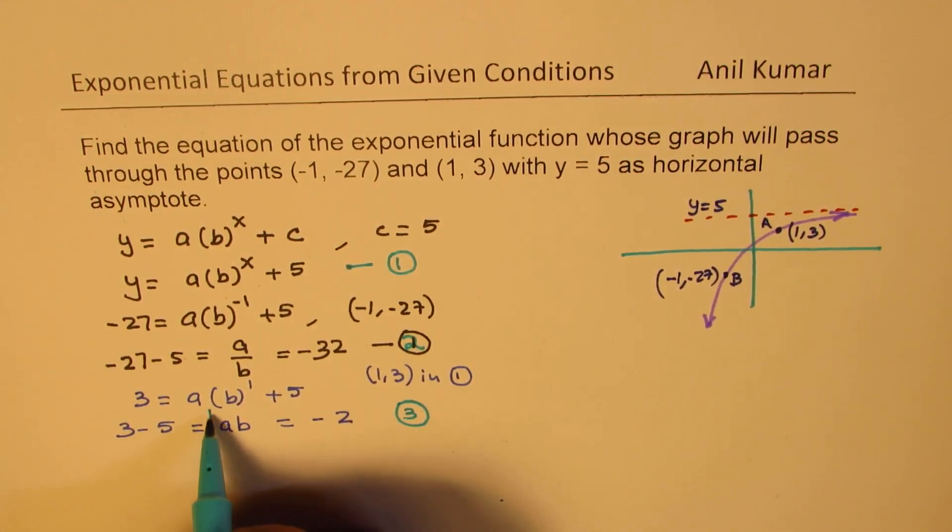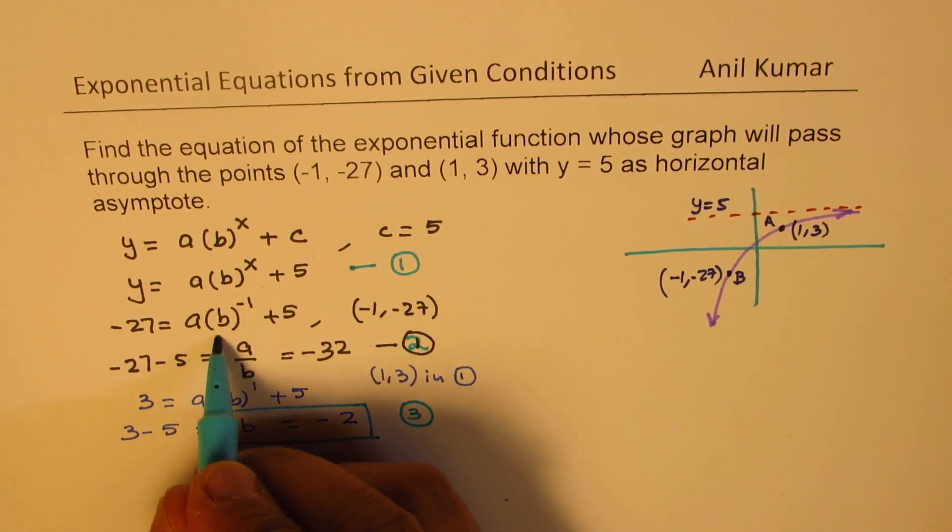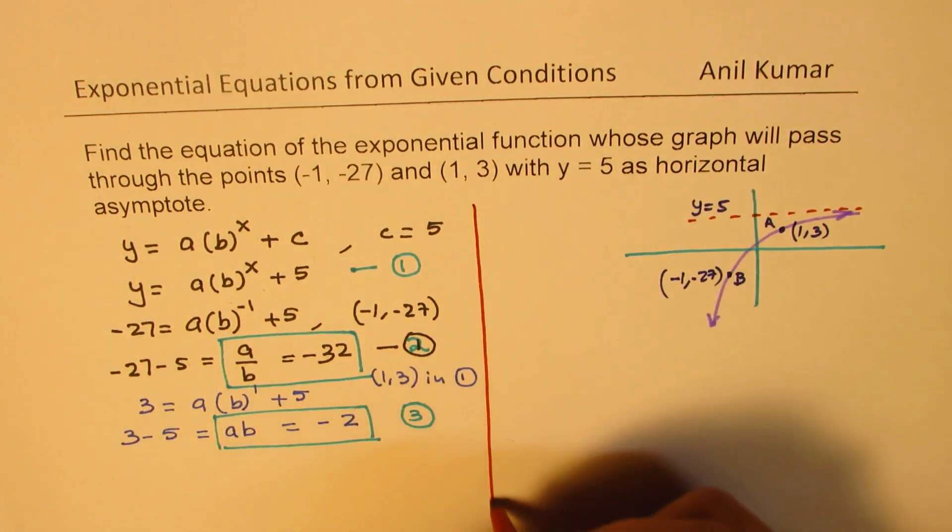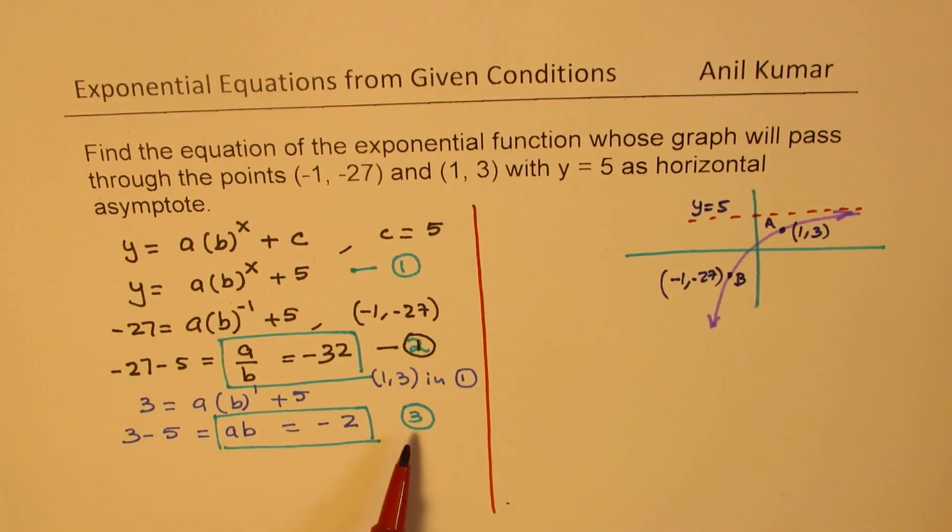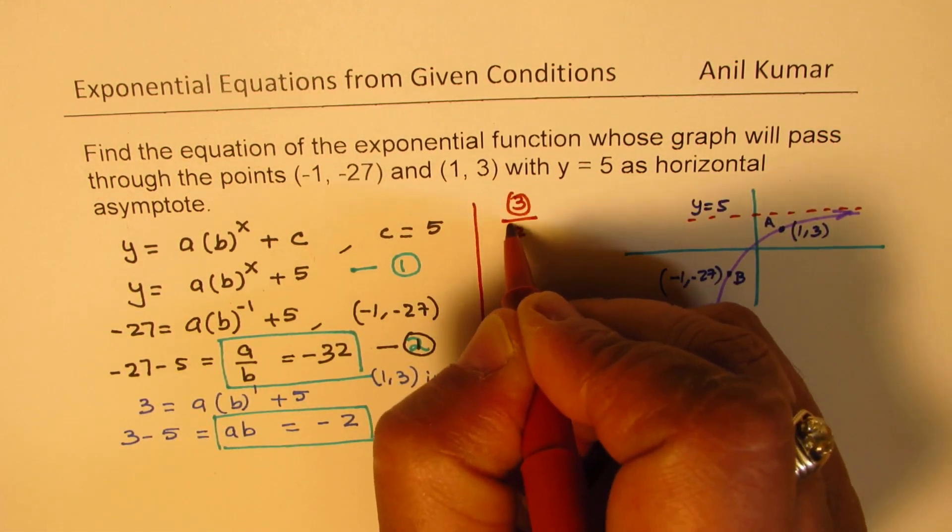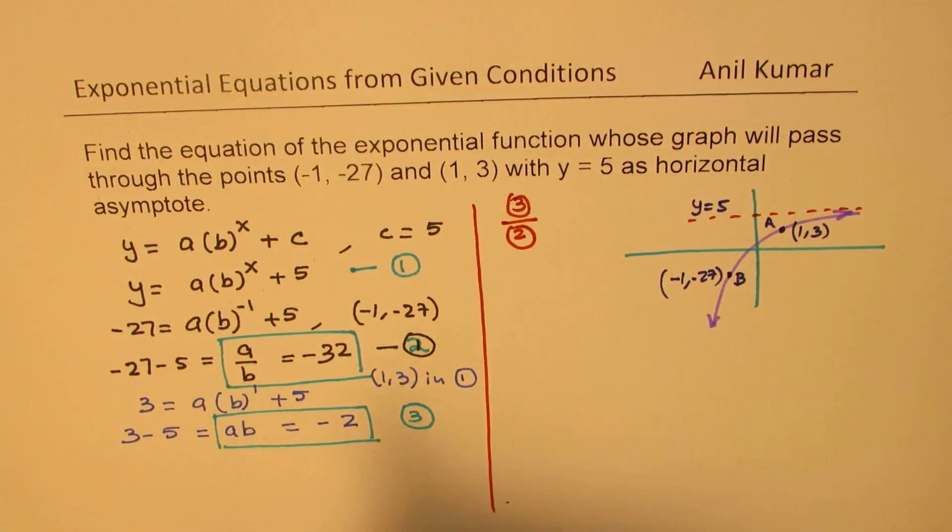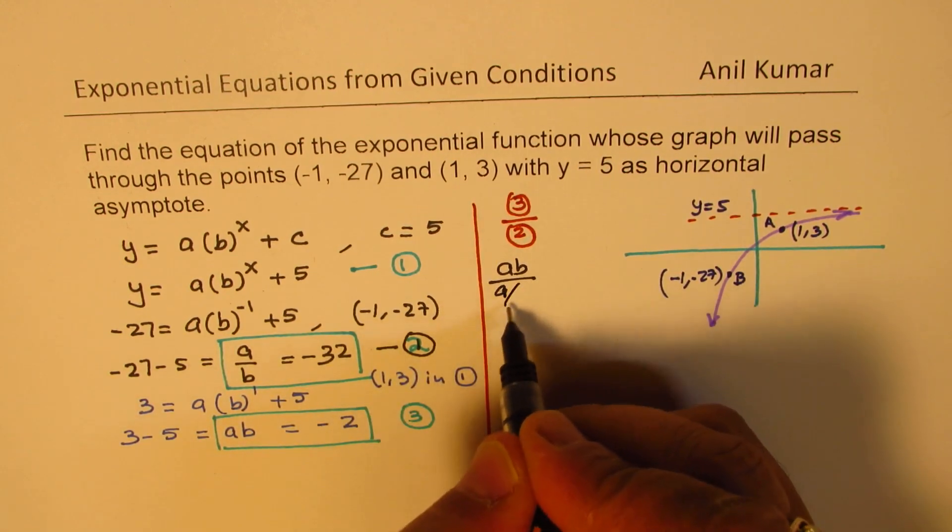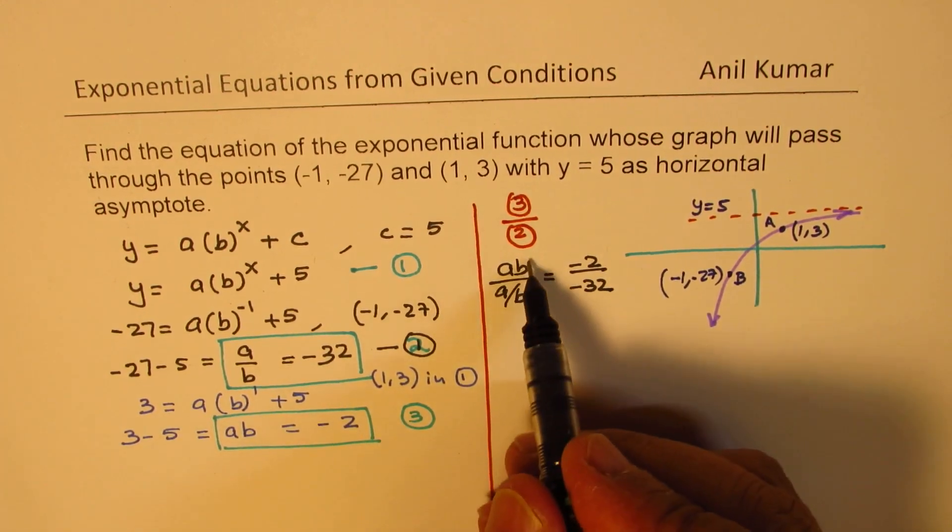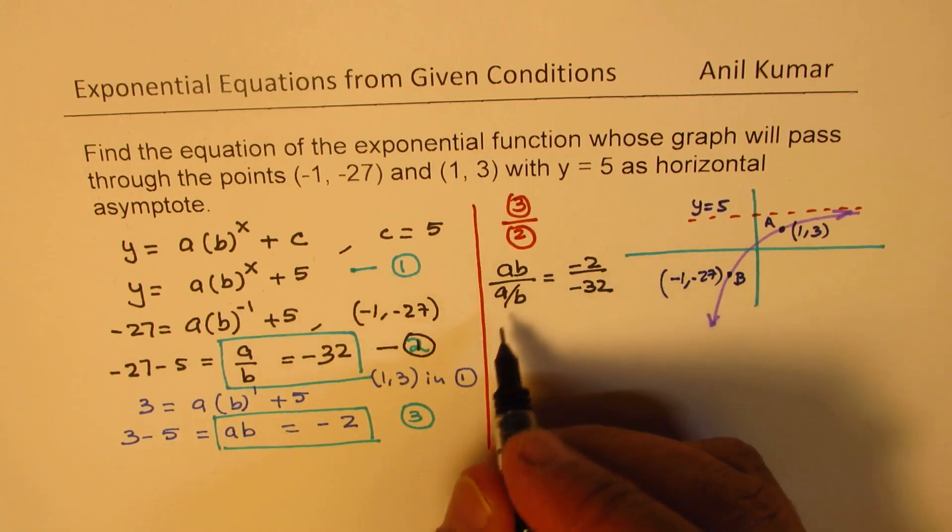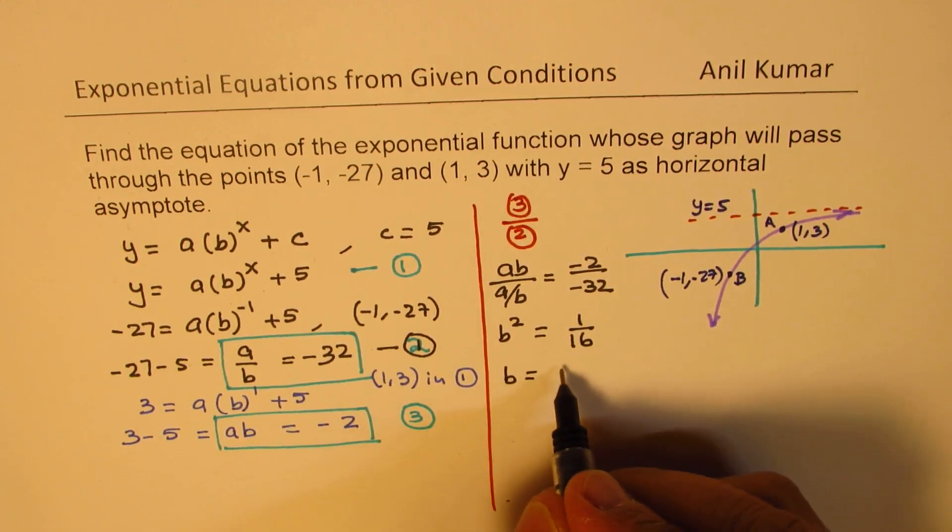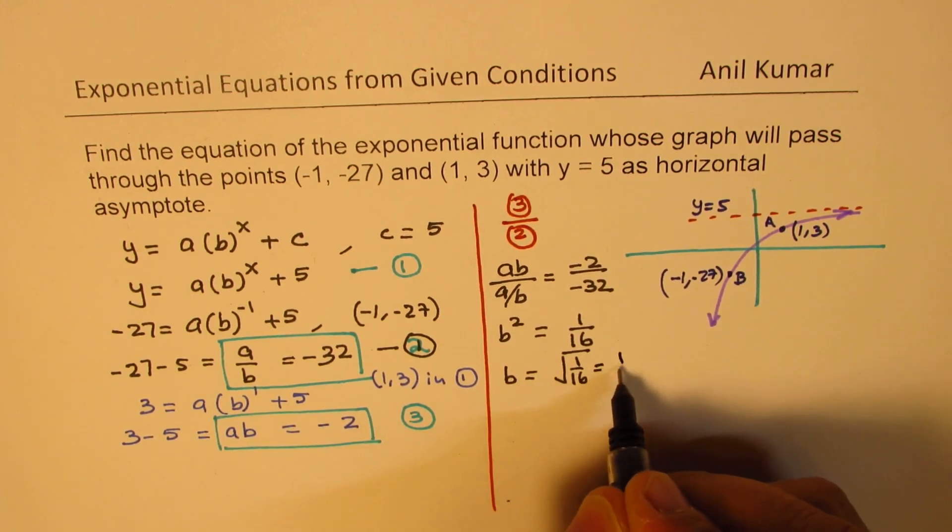Now ab = -2 and a/b = -32. From here we can solve for both a and b. If I divide equation 3 by equation 2, I get ab ÷ (a/b) = -2 ÷ (-32). So b cancels with a and a, and b/b gives you b² = 1/16. That gives you b = √(1/16), which is 1/4.